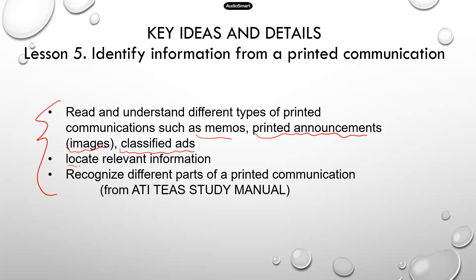Next, you need to be able to locate relevant information. Basically, you can understand the information and also identify the details that can help you answer a specific question. Last, recognize different parts of a printed communication. These objectives are very similar — if you can recognize the different parts, then that means you understand the information and you can locate a specific piece of information.